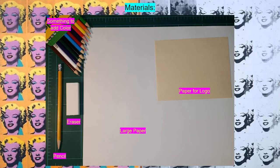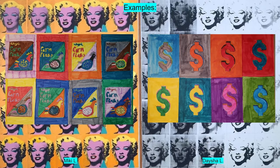For the project we're going to be doing today, the materials we'll need are a large piece of paper, a smaller piece of paper — we'll get to the dimensions later — a pencil, an eraser, and then something to add color with, whether that's colored pencils, markers, or preferably paints. Here are a couple of examples of what you can do with the Andy Warhol style project today.